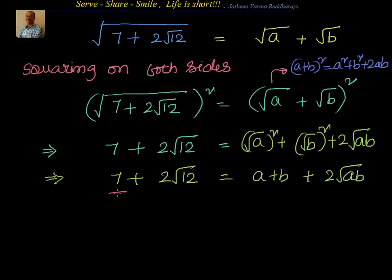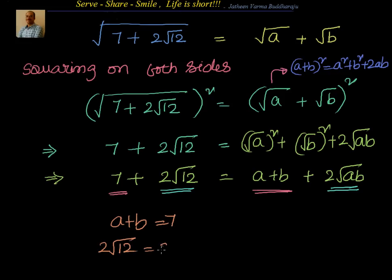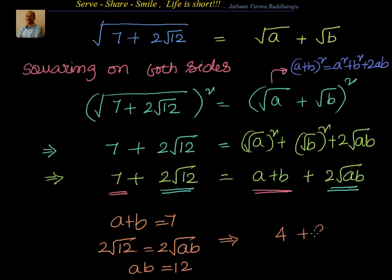So we have 7 plus 2 root 12 equal to a plus b plus 2 root ab. Now, if you compare the integer values and the irrational values, we get a plus b equal to 7, and from 2 root ab equal to 2 root 12, we get ab equal to 12. We have to look for two numbers which add up to 7 and multiply to 12, which is 4 and 3.